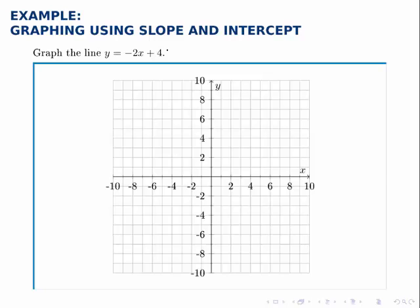When a linear equation is written in the form y equals mx plus b, the coefficient of x — the number that's multiplied by x — is m, or the slope. So in this case the slope is negative 2. And b is the constant; in this case it's 4, and that's the y-intercept.